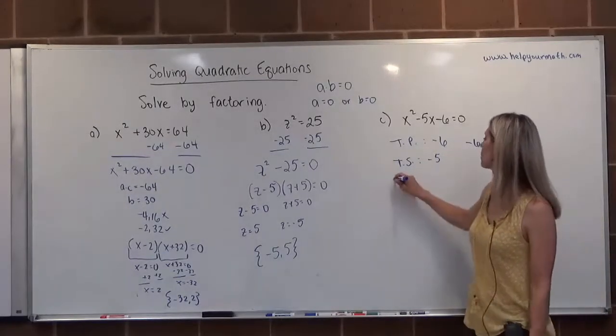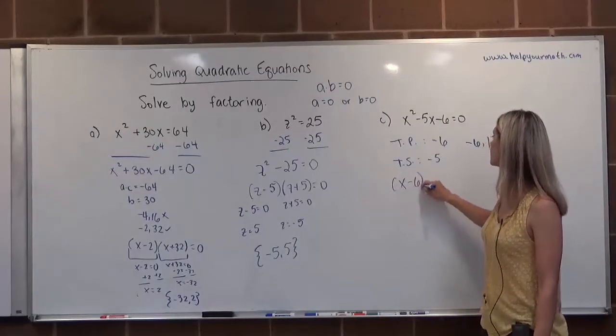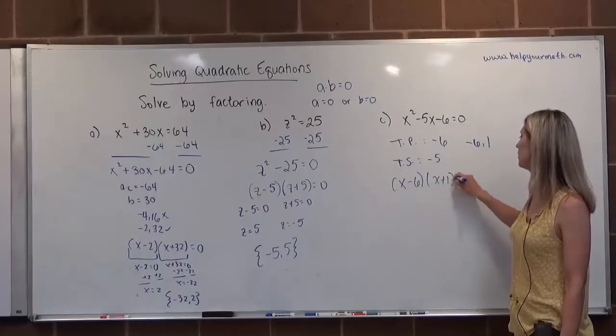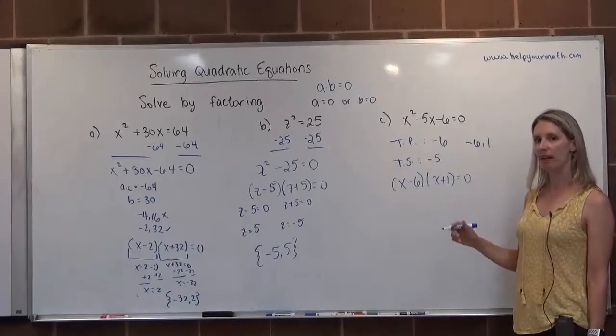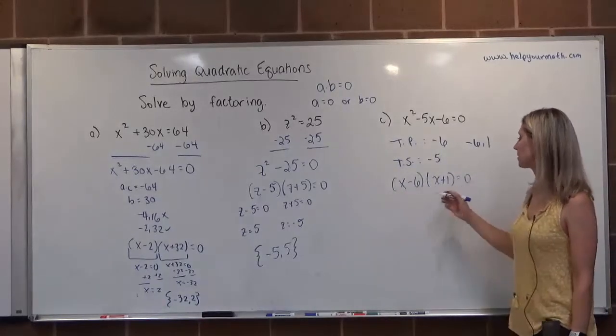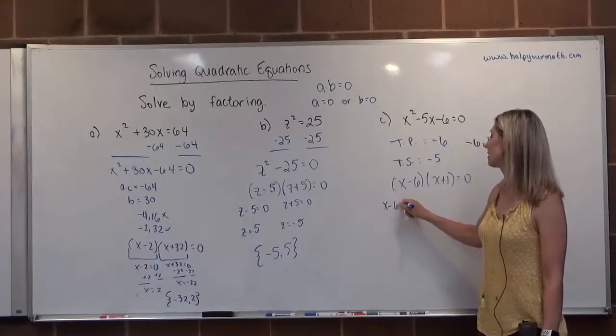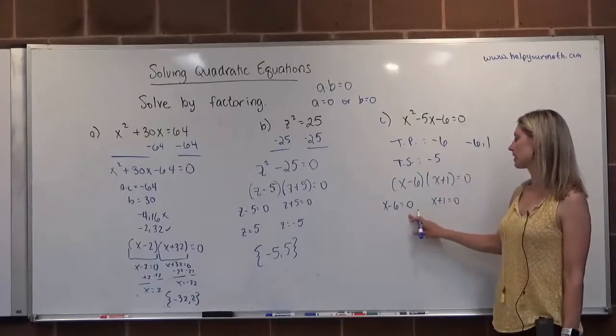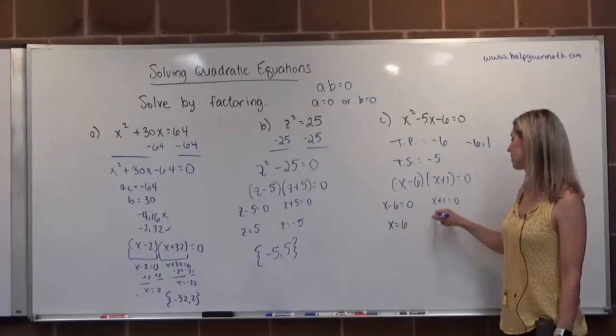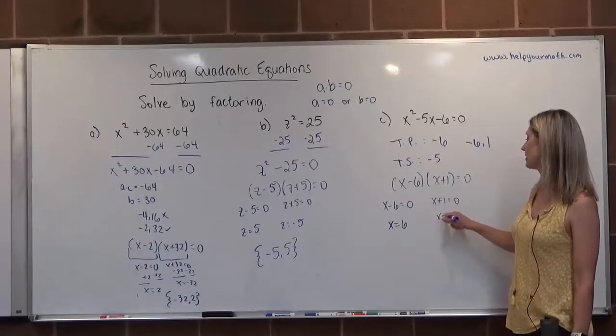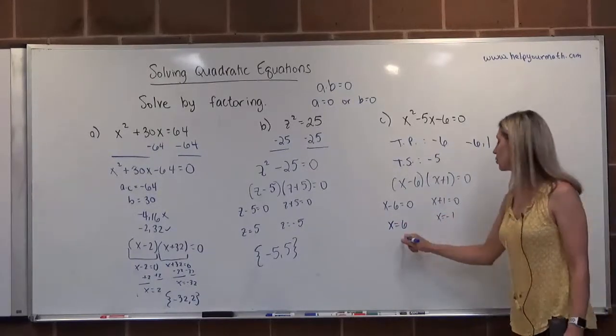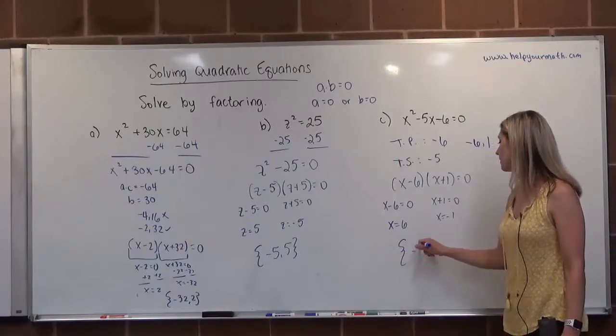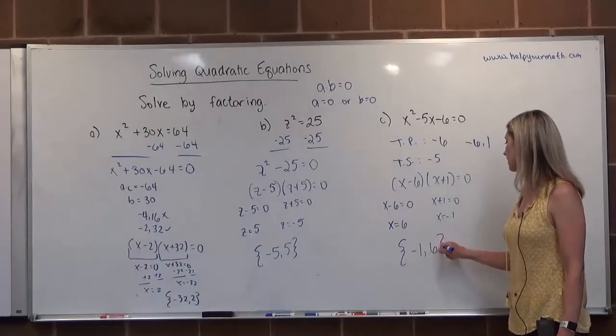Here's our winning combination. We're going to plug it in. x minus 6 times x plus 1 is equal to 0. Once it's factored, I have this thing times this thing equals 0. That means either this thing is 0 or this thing is 0. If x minus 6 is equal to 0, that means that x is 6. If x plus 1 is equal to 0, that means x is negative 1. So the two solutions here would be negative 1 and positive 6.